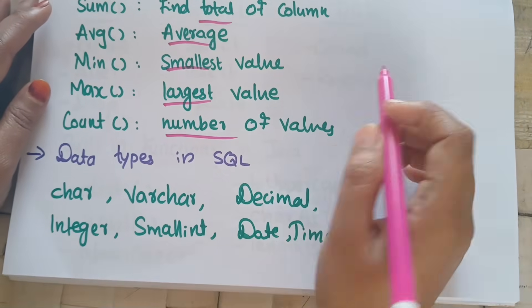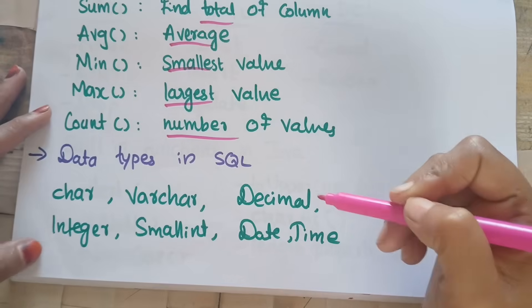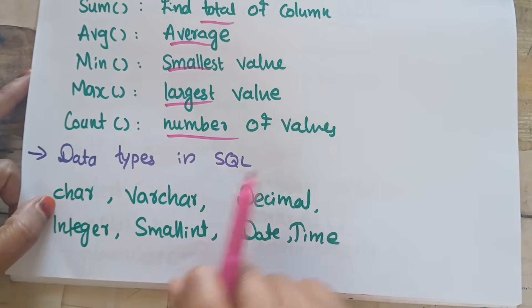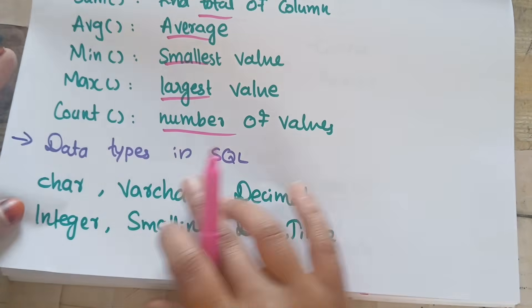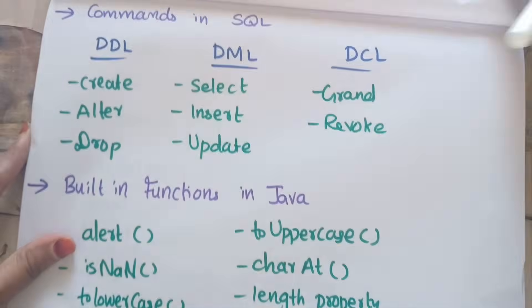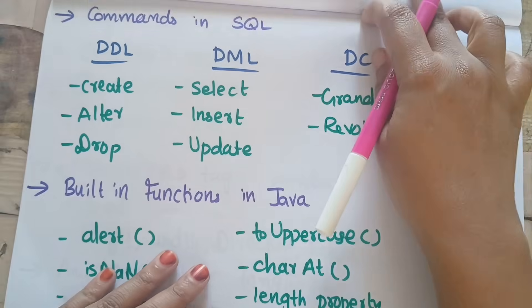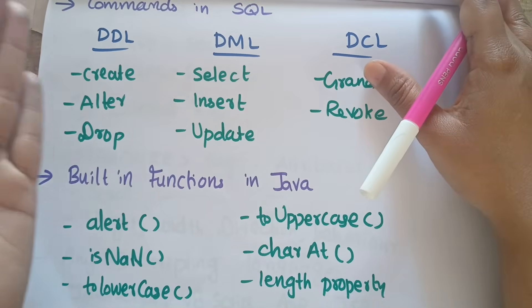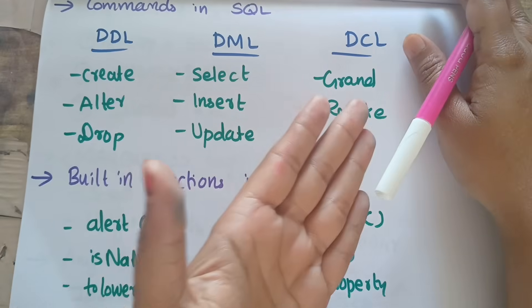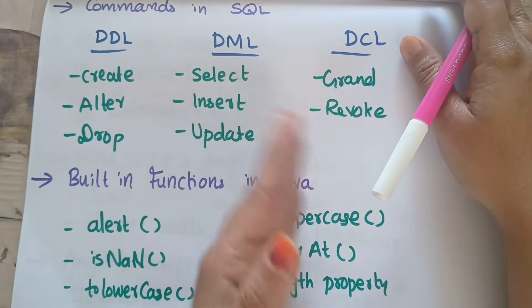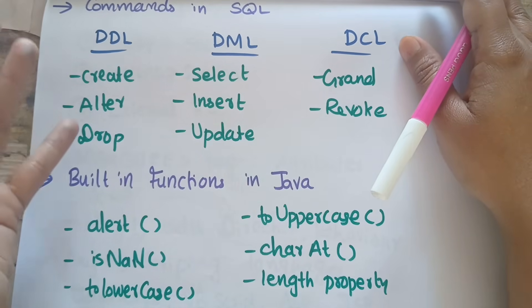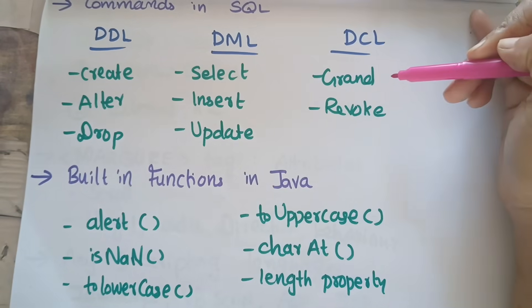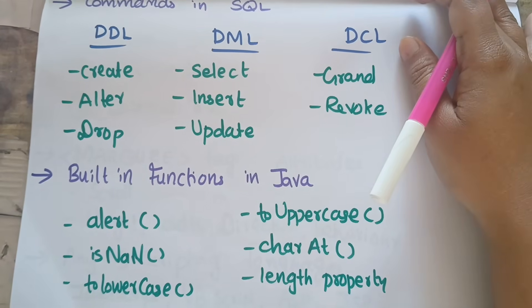SQL data types include decimal, integer, smallint, date, and time. SQL commands are categorized as DDL, DML, and DCL. DDL — Data Definition Language — includes Create, Alter, Drop. DML — Data Manipulation Language — includes Select, Insert, Update. DCL — Data Control Language — includes Grant and Revoke.